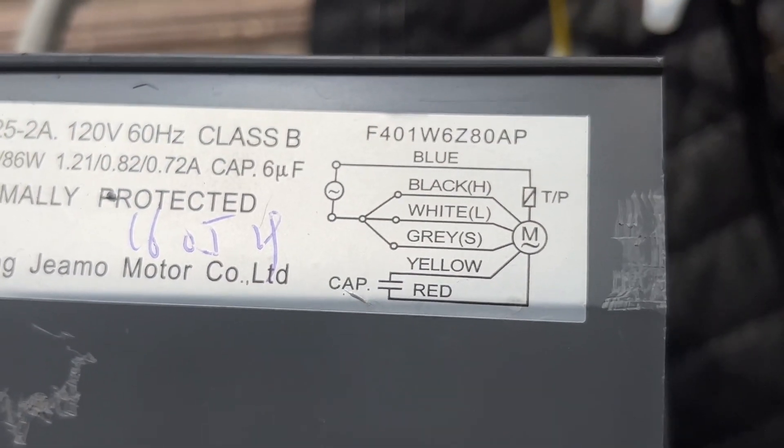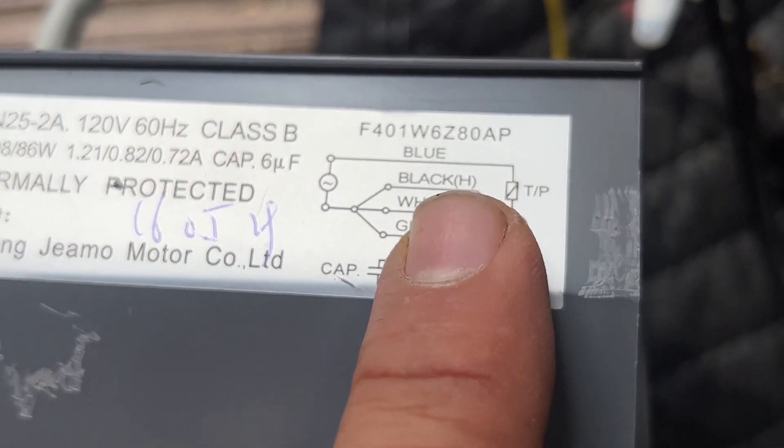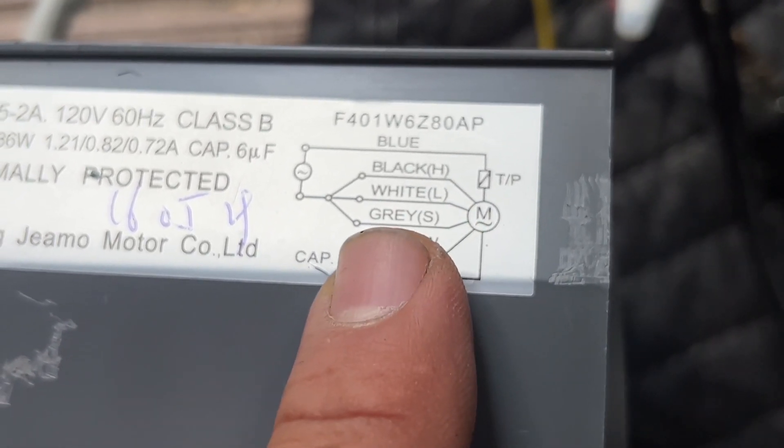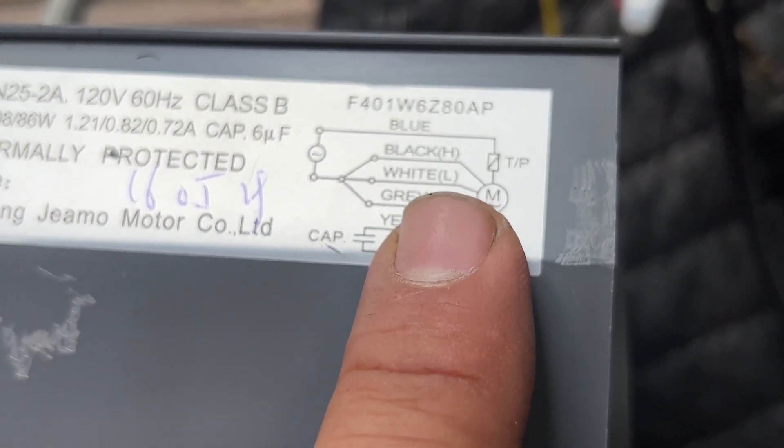I also forgot to mention this to you. See the black H, that's the highest speed. White L, lowest speed. Gray S, slow speed. High, low, slow.